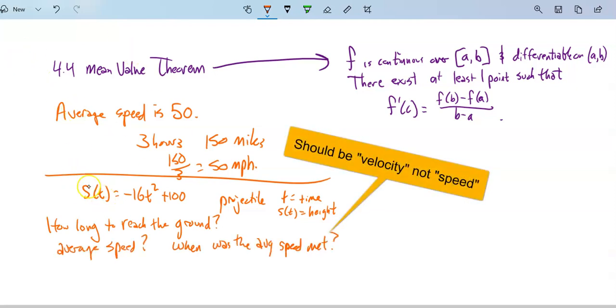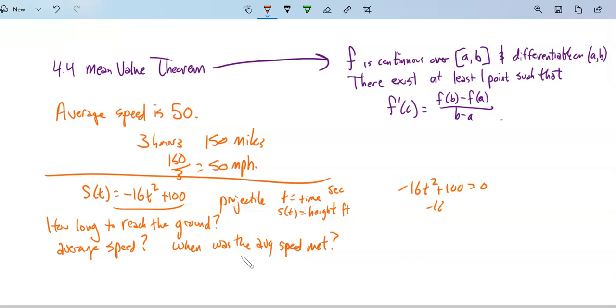So we have this projectile, this movement, this displacement formula. This is some sort of projectile, S(t) = -16t² + 100. T is time, S(t) is the height. Let's say this is in seconds and feet. How long does it take to reach the ground? That is basically asking us when does this equal zero. So subtract 100 from both sides, divide by -16, 100 over 16, square root, 10/4. So it takes 10/4, which is 5/2 of a second for this thing to get to the ground. So that is when it hits the ground.